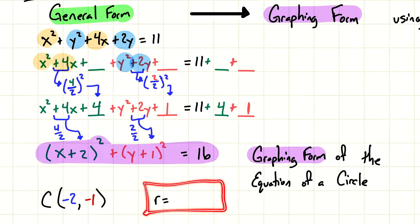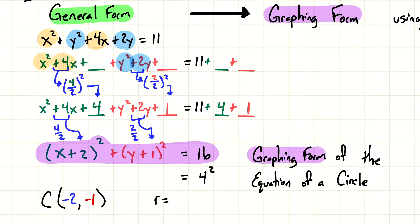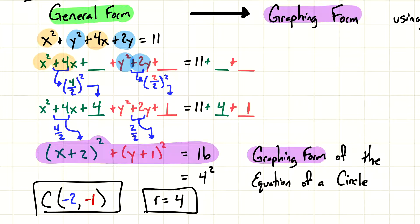What's the radius? Remember, the hint is that it's not 16. The graphing form is like Pythagorean theorem, so 16 should be rewritten as 4 squared. You can always take the square root of that number to find the answer. So the radius equals 4. Center is (−2, −1) and radius equals 4.